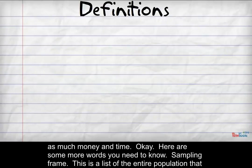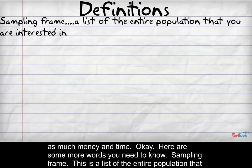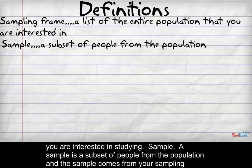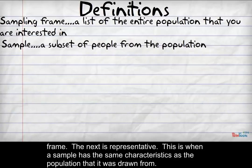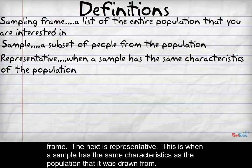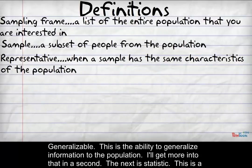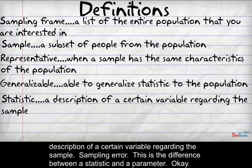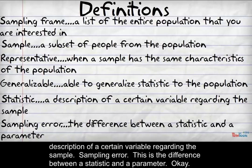Here are some more words you need to know. Sampling frame — this is a list of the entire population that you're interested in studying. Sample — a sample is a subset of people from the population, and the sample comes from your sampling frame. Representative — this is when a sample has the same characteristics as the population that it was drawn from. Generalizable — this is the ability to generalize information to the population. Statistic — this is a description of a certain variable regarding the sample. Sampling error — this is the difference between a statistic and a parameter.